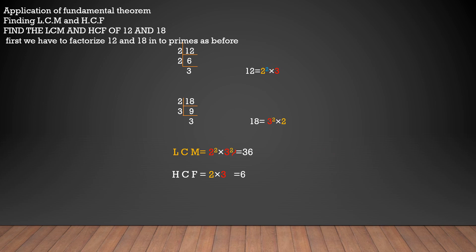For HCF, you take only the common factors and their least powers. Here 2 is common and 3 is common. The least power of 2 is 1 and the least power of 3 is also 1. So HCF = 2¹ × 3¹ = 6. Remember: for LCM, take all factors and the highest powers; for HCF, take only common factors and the least powers, then multiply them to get LCM and HCF.